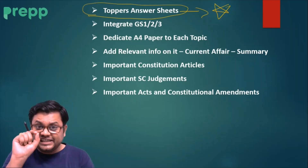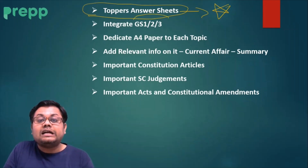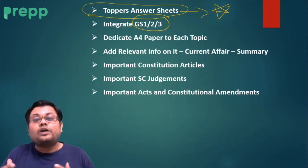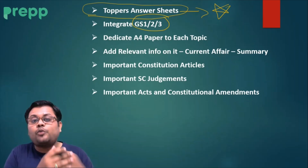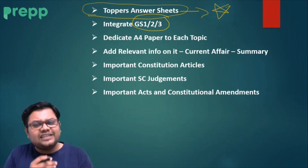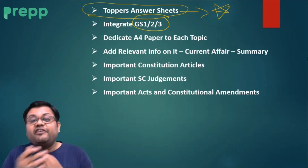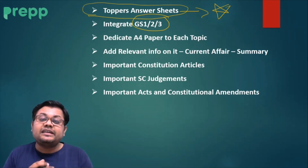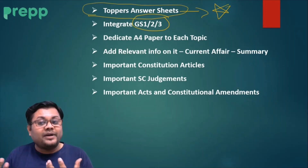GS1, GS2, and GS3 should not be seen in isolation — all three are interlinked. For example, the society topic from GS1 is related to GS2, and welfare measures are common to both GS2 and GS3.